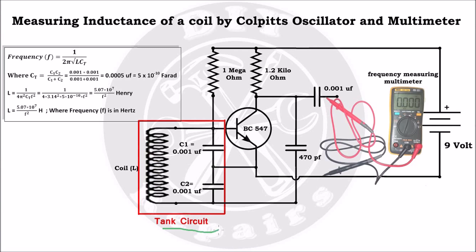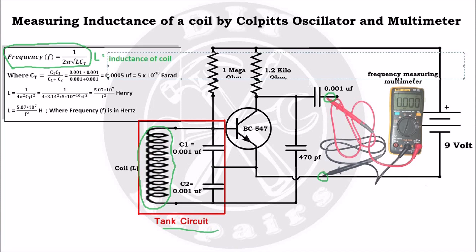This is its tank circuit. In place of this coil, you can put any coil whose inductance is to be measured. From these two points we will measure the frequency with the help of a multimeter. This is the formula to calculate the frequency of the Colpitts oscillator. Here L is the inductance of the coil. These two capacitors are connected in series in the tank circuit. The value of total capacitor Ct after calculating will give 5 × 10⁻¹⁰ Farad.